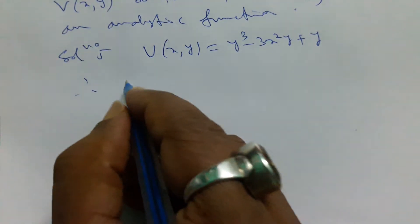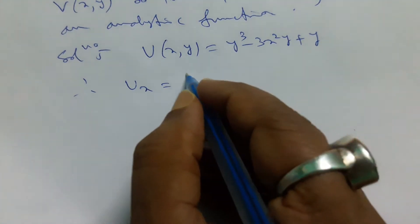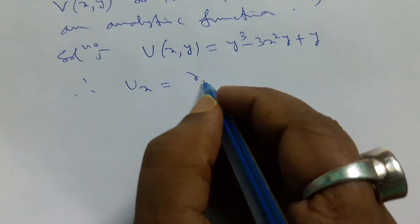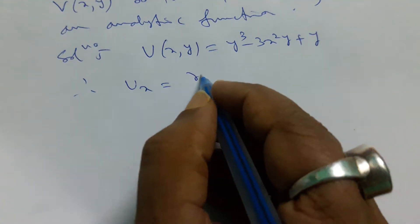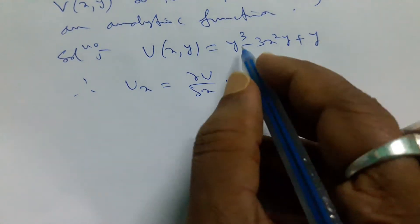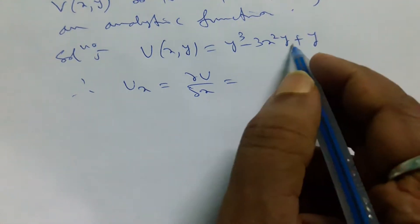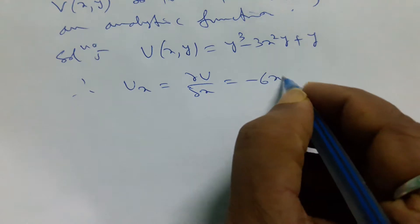Therefore, we calculate ux equal to del u del x. That would be the first term, third term zero, we consider only second term. So minus 6xy.